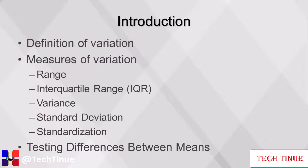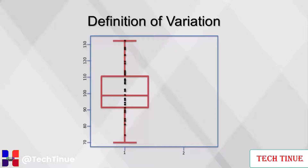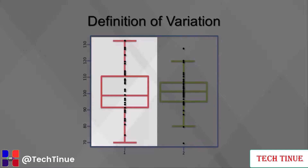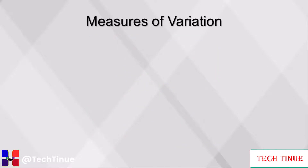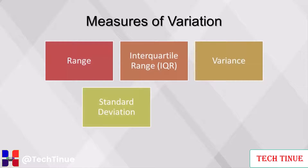This video will cover variation, including a definition of variation and the measures of variation: range, interquartile range, variance, standard deviation, and standardization, as well as testing differences between means. Variation refers to how spread out the values are for a variable. Interpreting variation — explaining a variable's variation in reference to other variables — is a foundational task in business analytics. Variables with values that are spread out have higher variation, while variables with values very close to the mean have lower variation.